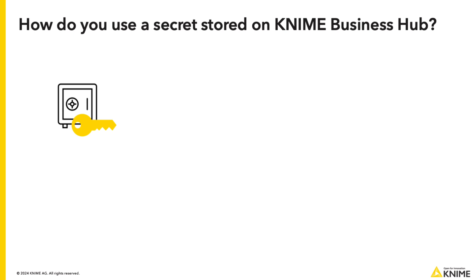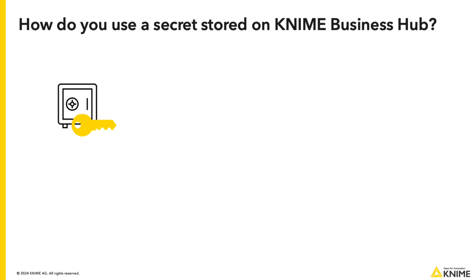So, how do you use a secret stored on KNIME Business Hub? Instead of hardcoding your credentials directly in a workflow, you can store them on KNIME Business Hub and access them in a workflow. This way, the secret is available only to you or to users who have access to the secret, but not necessarily to users who have view rights to the workflow.